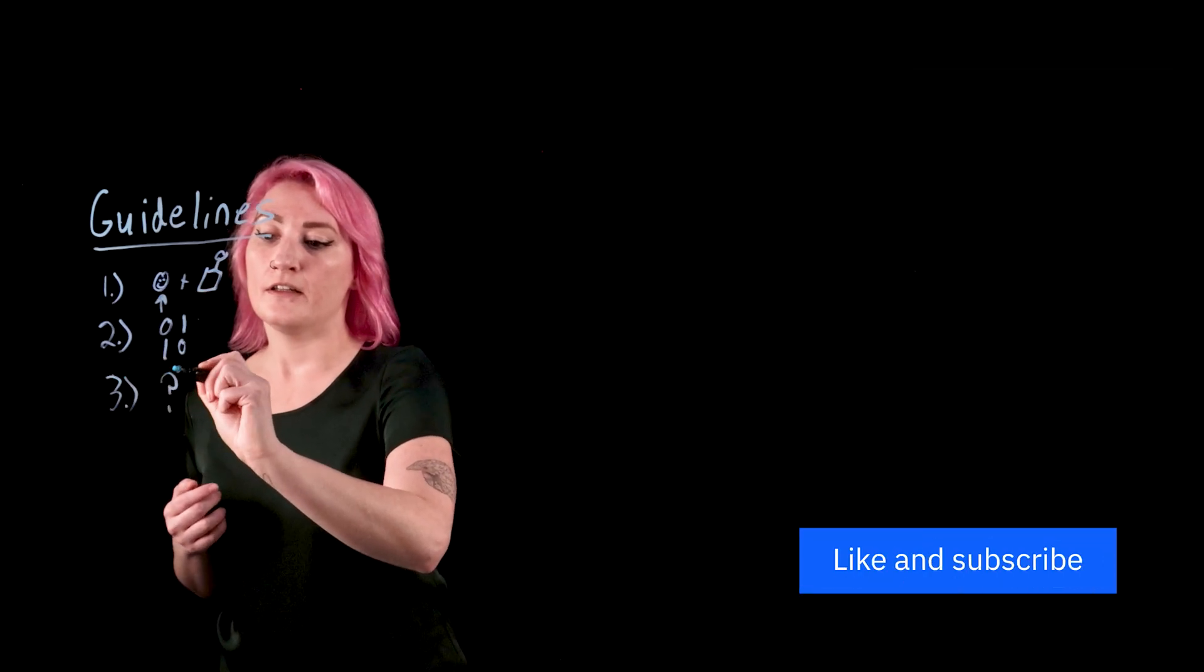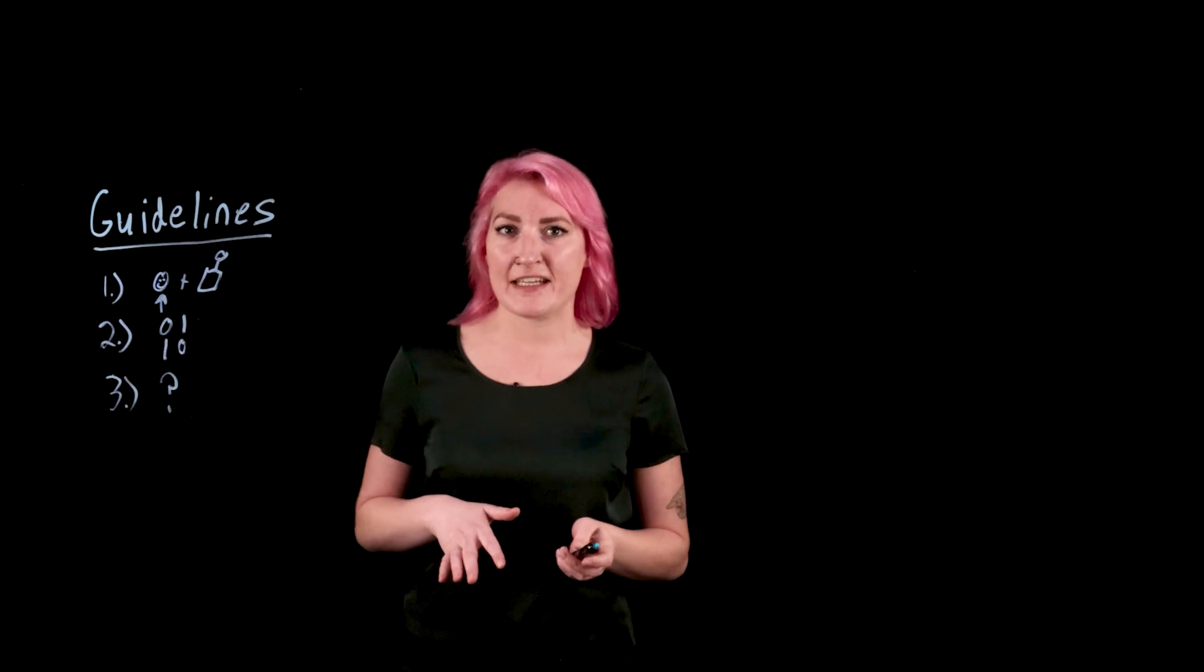Number three, solutions have to be transparent and explainable. And what this means is that we need visibility into who is training the system, what data they're using to train the system, and then also how all of this is going to affect an algorithm's recommendations to the end user.